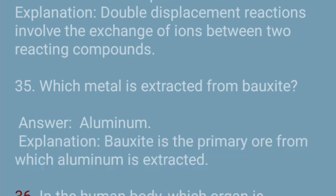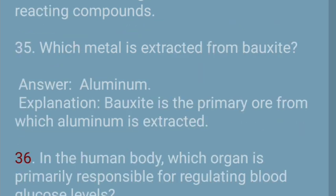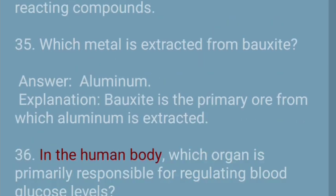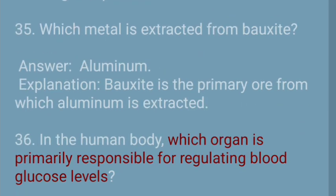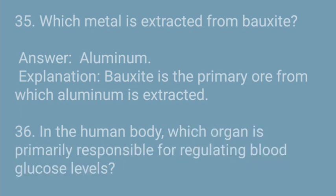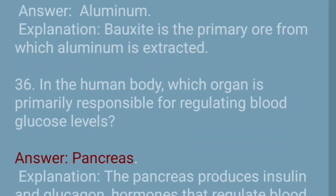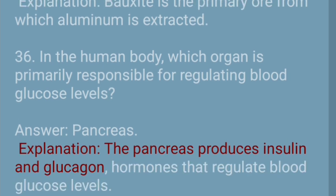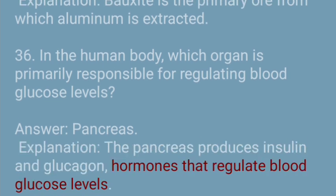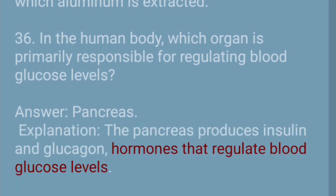Question 36: In the human body, which organ is primarily responsible for regulating blood glucose levels? Answer: Pancreas. Explanation: The pancreas produces insulin and glucagon, hormones that regulate blood glucose levels.